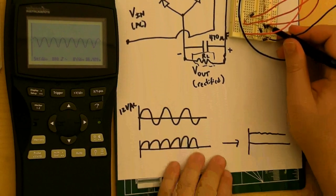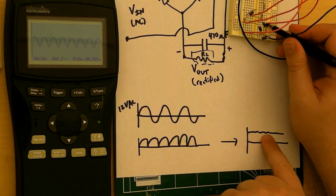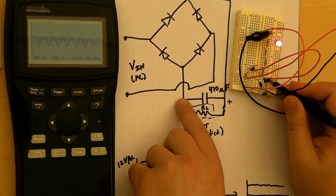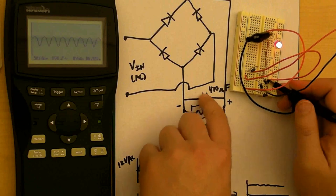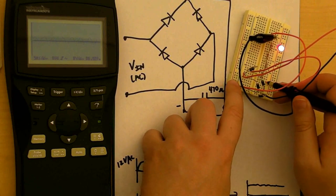Now what we want to do is get rid of those humps and make it more level. So we're going to put a capacitor across the output here. Let me see if I can do this carefully.